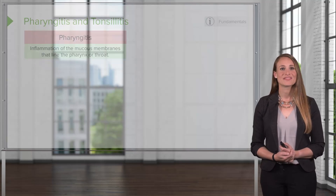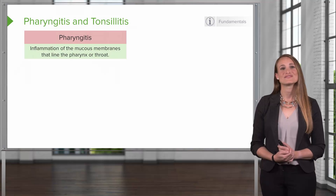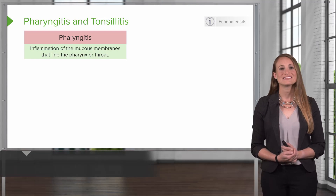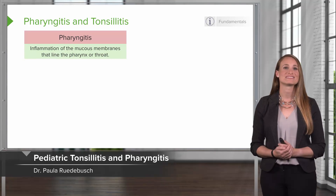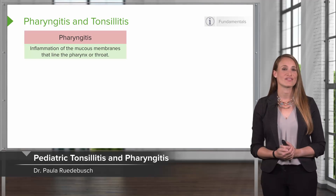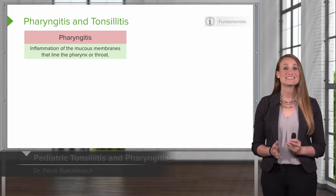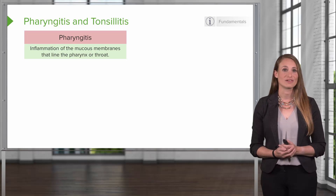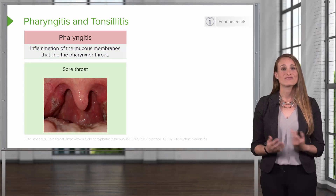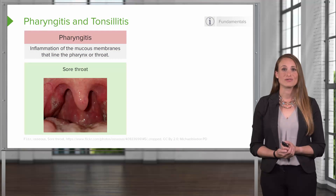Now we will explore some common throat conditions. First is pharyngitis. This is inflammation of the mucous membranes that line the pharynx of the throat. This is a symptom — this is what the patient feels. They're going to feel a sore throat.